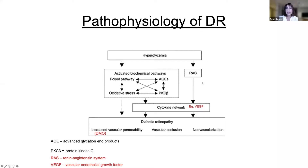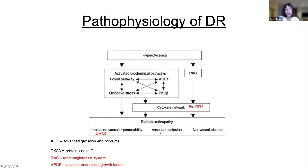The RAS pathway — the renin-angiotensin pathway — is increasingly important because treatments are being geared towards specific pathways. It is very complicated, but just remember it is all about high blood sugar activating different pathways, a big part of which is VEGF. Once you get the increased permeability, the other side is vascular occlusion — leading to neovascularization.